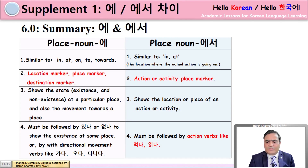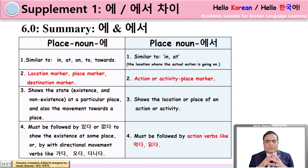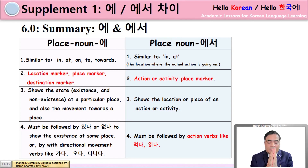For 에서: Point number one — similar to IN or AT. Point number two — it is an action or activity place marker. Point number three — shows the location or place of an action or activity. Point number four — must be followed by action verbs like 먹다, 읽다, 마시다, 공부하다, 운동하다. So the key points are: if using 에, the next word can be 있다, 없다, 가다, 오다, 다니다. If using 에서, any action verb can follow.